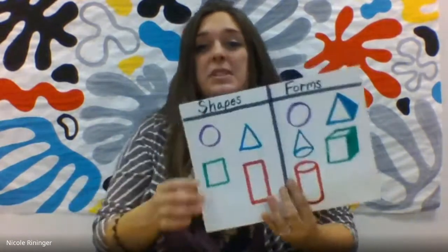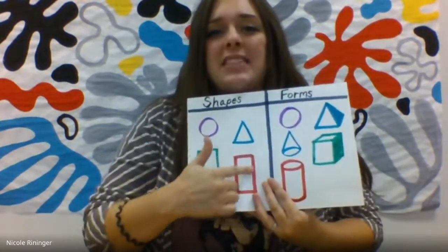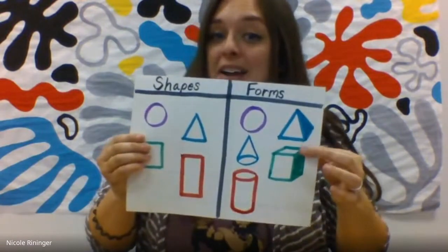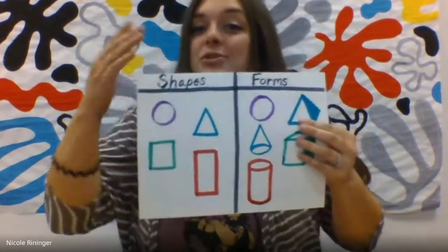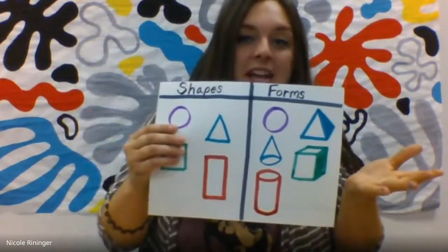Forms are objects that take up space. Last week in art we learned about shapes, and what shapes have in common is that they are all flat, like this piece of paper. In contrast, forms take up space. So shapes are flat, forms take up space.